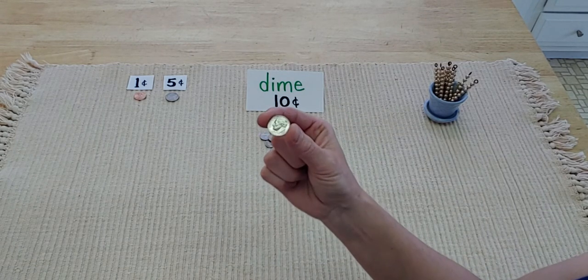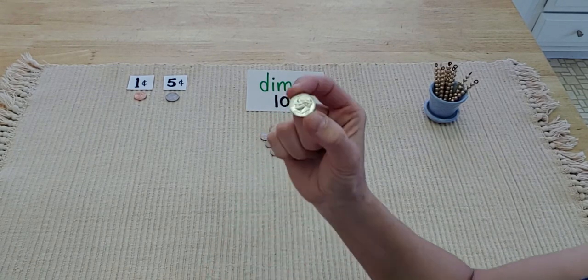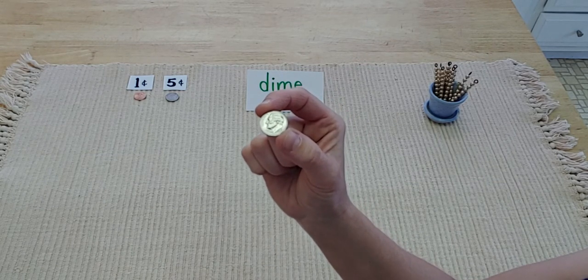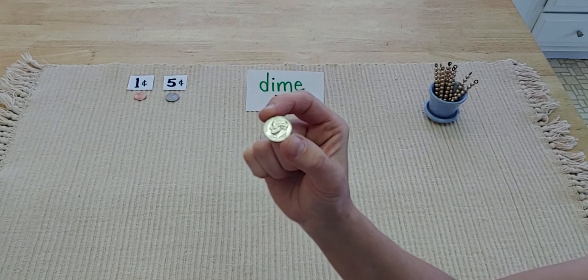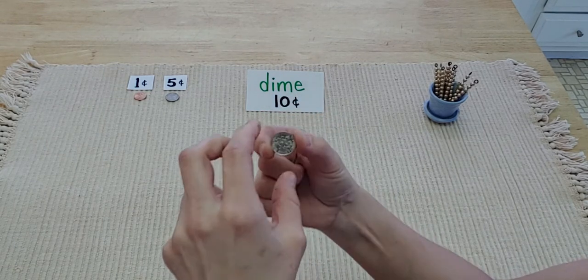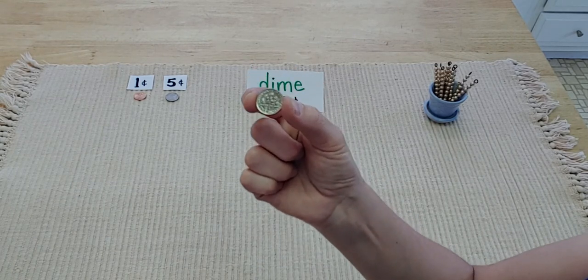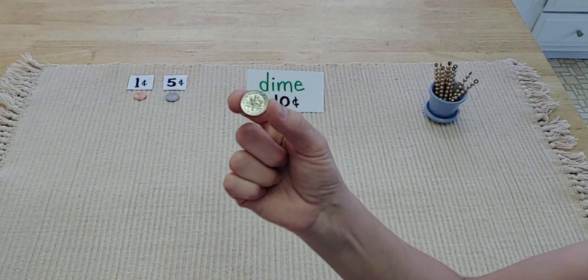On the front of the dime is President Theodore Roosevelt, who was one of the presidents. And on the back, if you can see through the camera, there's a symbol.